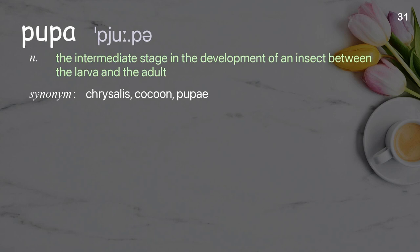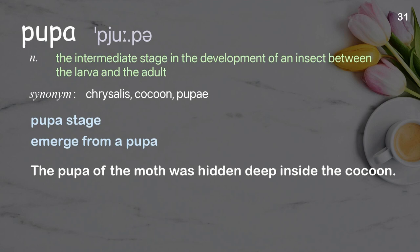Pupa: the intermediate stage in the development of an insect between the larva and the adult. Examples: emerge from a pupa. The pupa of the moth was hidden deep inside the cocoon.